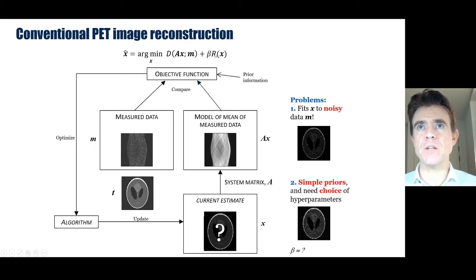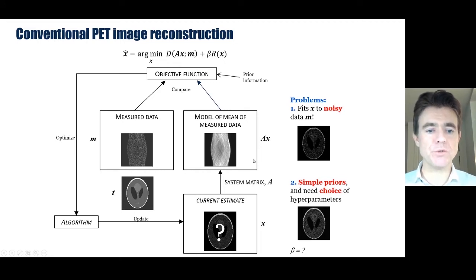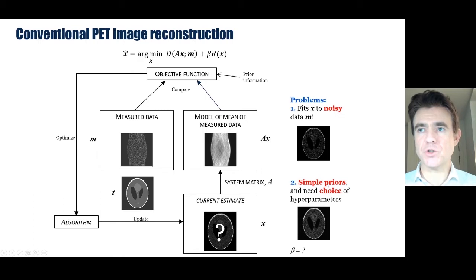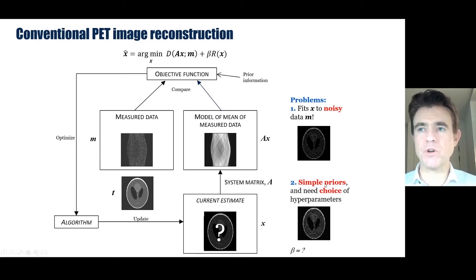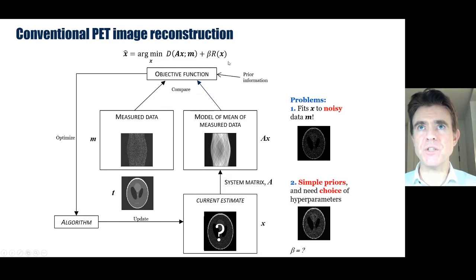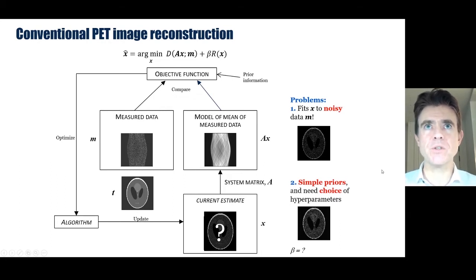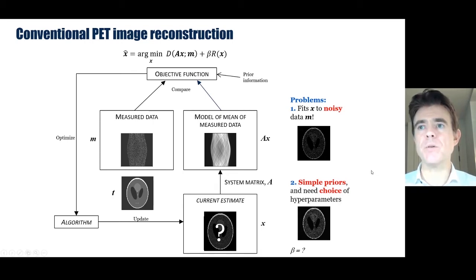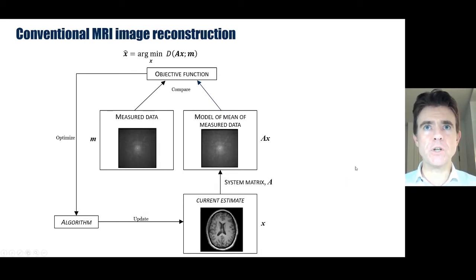We add a penalty term to impede solutions that are too noisy, introducing prior beliefs about how the reconstruction should look. The problem is we need to choose relatively simplistic priors that are easy to handle mathematically, such as quadratic penalties, and we also need to choose the regularization strength — hyperparameter beta. These are two key problems with conventional PET image reconstruction where machine learning can really help.